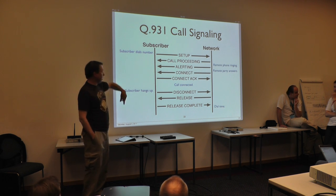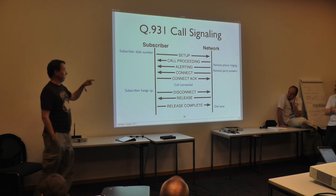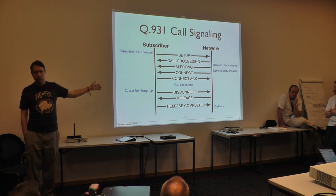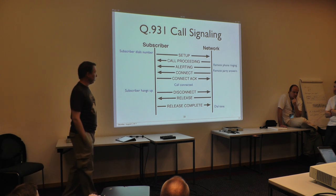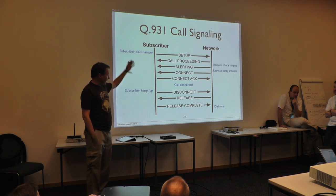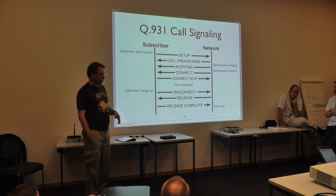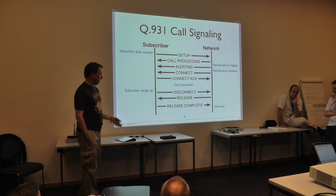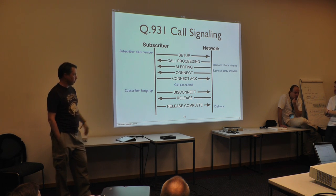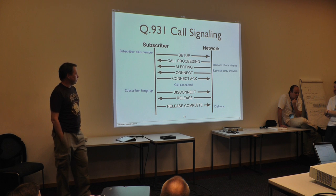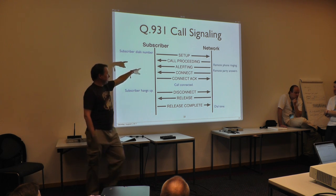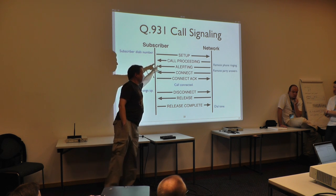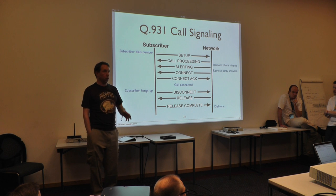We talked about Q.931 — here is the actual ladder diagram for Q.931 protocol. This is at the ISDN level, and the ISDN signaling that happens in the SS7 side is actually simplified from this. The setup message carries the dialed number and goes into the network. The network sends back a call proceeding acknowledgement — it just says it got the setup message and is working on it.